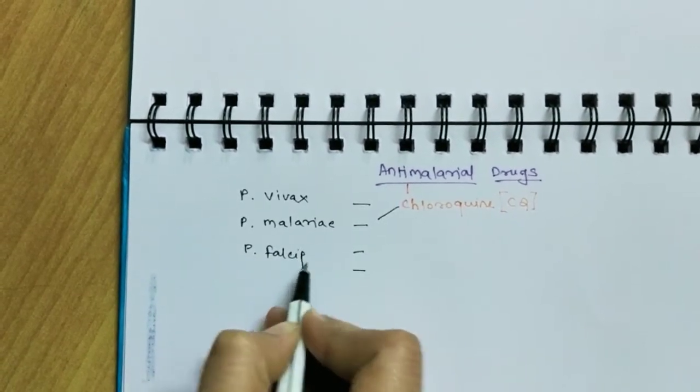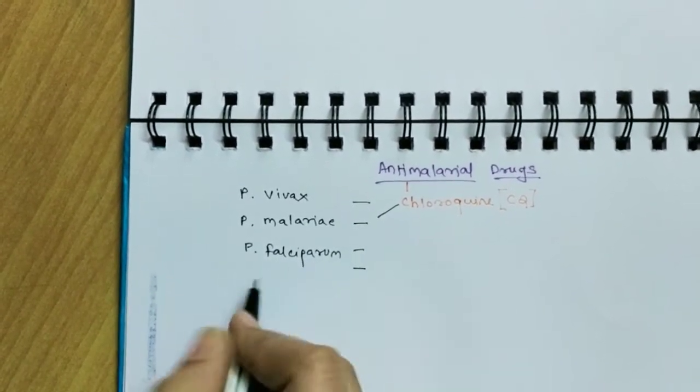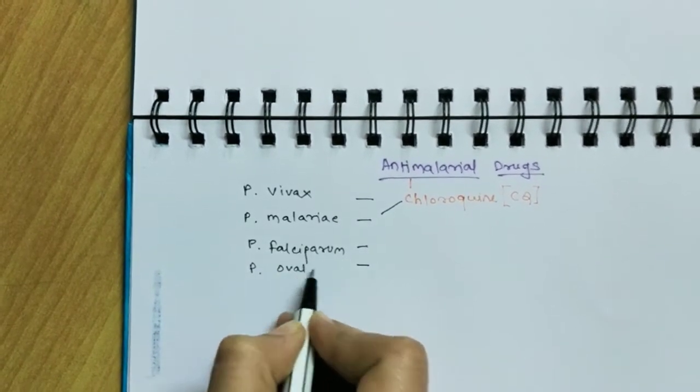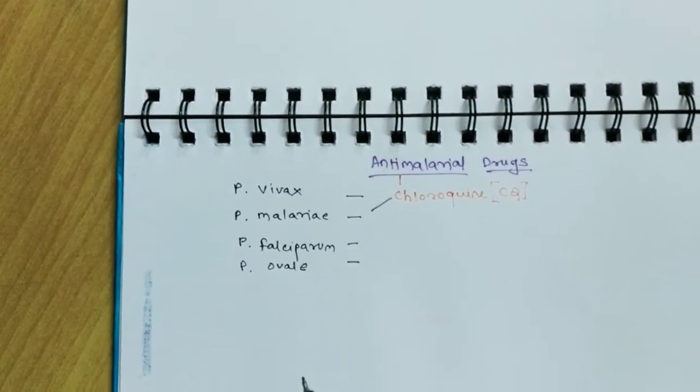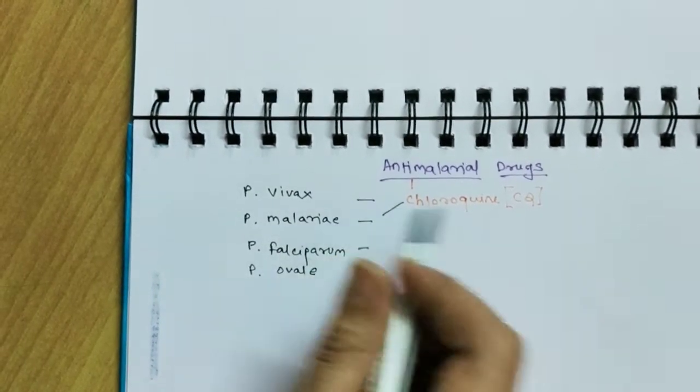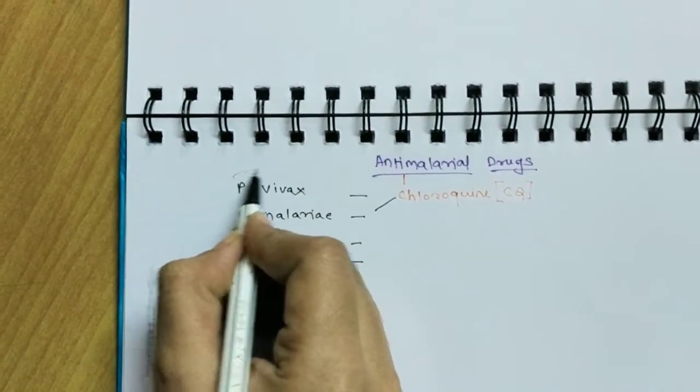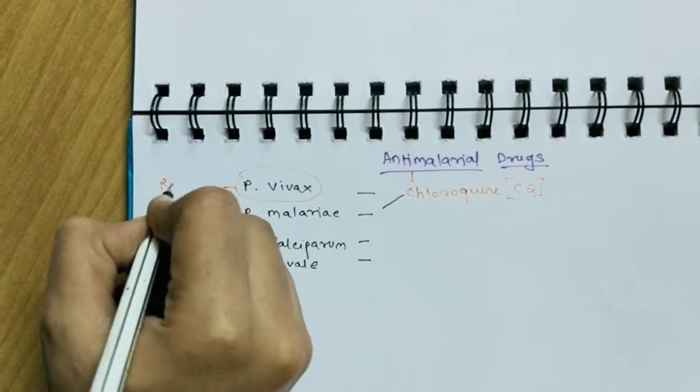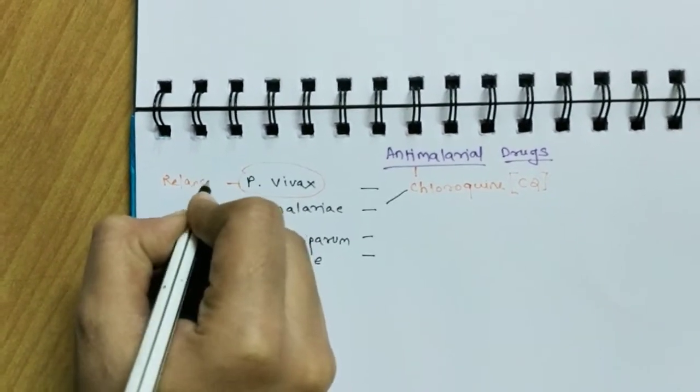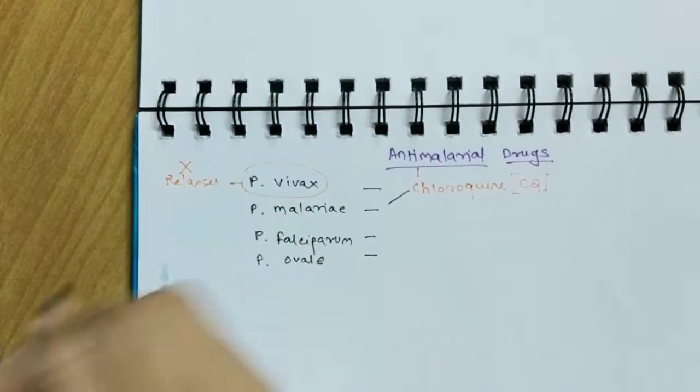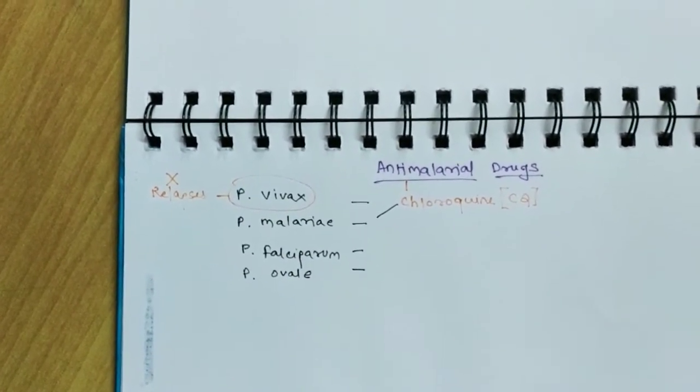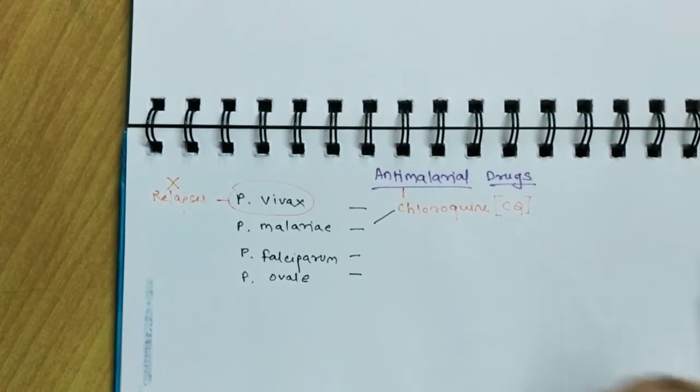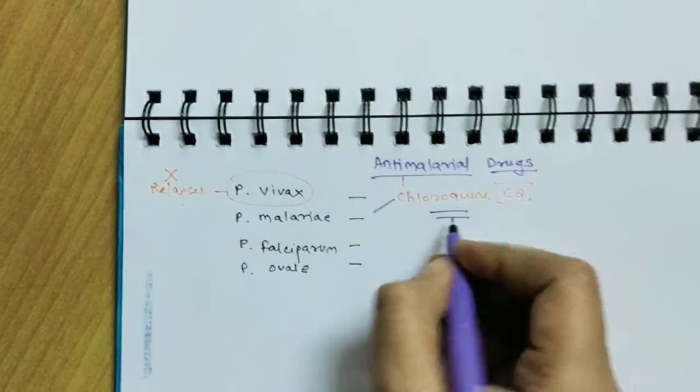Now in India, the falciparum got its resistance against chloroquine, so chloroquine is ineffective against Plasmodium falciparum. And for vivax, we can't use chloroquine because it is ineffective for the relapses. Now for relapses in malaria fever, chloroquine is effective against it in one to two bouts.